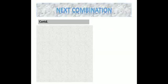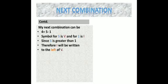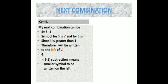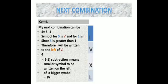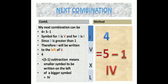Let's take another combination. 4 is equal to 5 minus 1. We have only four numbers we can use in combination: 1, 5, 10, and 50. The symbol for 5 is V and for 1 is I. Since 5 is greater than 1, I will be written to the left of V. Subtraction means the smaller symbol is written to the left of the bigger symbol. Therefore, the Roman numeral for 4 is IV.